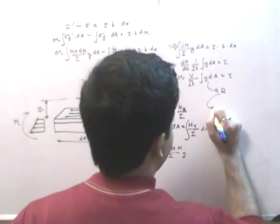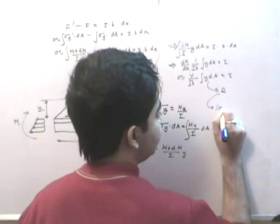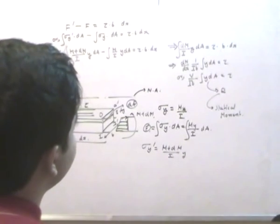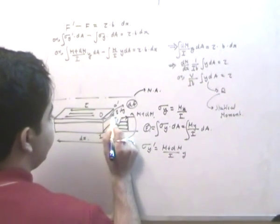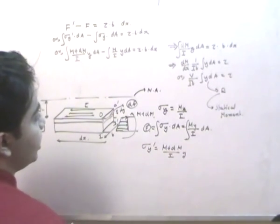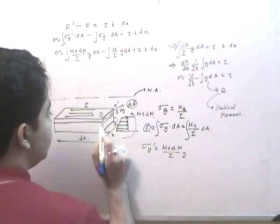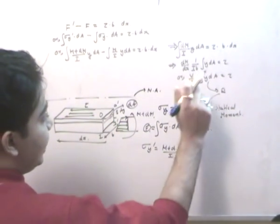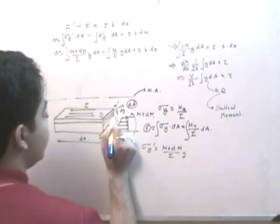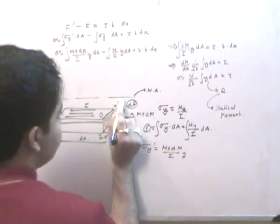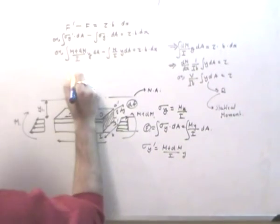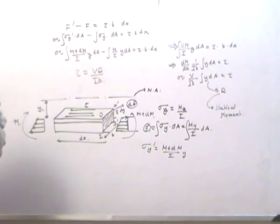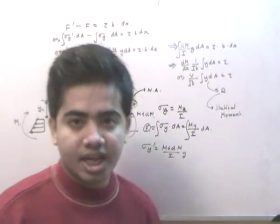The term ∫y · dA is equal to Q, which is the statical moment. Q refers to the moment of the area of the plane O-O'-I'-I about the neutral axis — that is, the integration of y · dA denotes the first moment of the shaded area about the neutral axis. Therefore, the shear stress formula is: τ = V·Q / (I·b). In the next lecture, we will find what Q is and take the derivation forward. Thanks for listening.